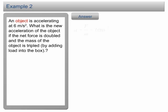The initial acceleration a equal to F over m and it is equal to 6 m per second square. If the net force is triple, the force will become 3F and if the mass of the object is double, the mass will become 2m. The new acceleration is equal to 3F over 2m.